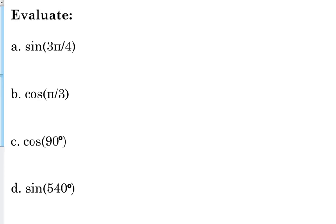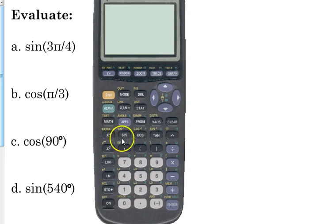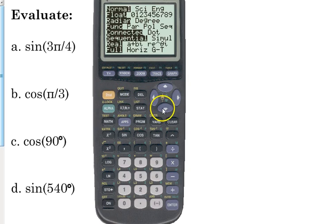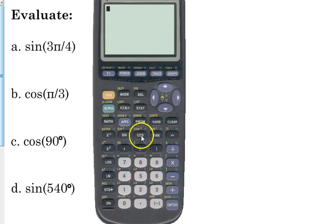So if they ask me, what's the sine of 3π over 4, I can grab my calculator and I can type that in. However, what do I need to make sure of first? It's got to be in radian mode. 3π over 4 is a radian angle, so it has to be in radian mode. You've got to make sure you're in radian mode or it's not going to give you the right answer.